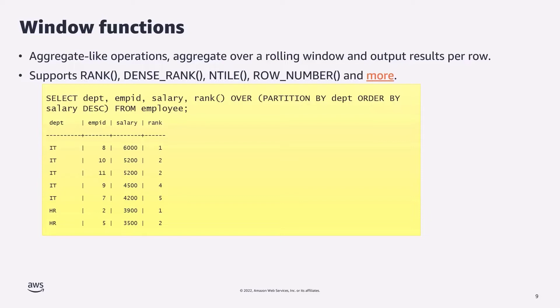With window functions, this is simple: use a rank function, partition over department, then order by salary, and you get a clean result. Aurora MySQL 3 now supports rank, dense rank, n-tile, row number, and many more window functions. This also helps migrating code from commercial database engines that used these window functions — it wasn't impossible before, but required extra legwork to rewrite queries. Now it's much easier because window functions are supported with Aurora MySQL 3.